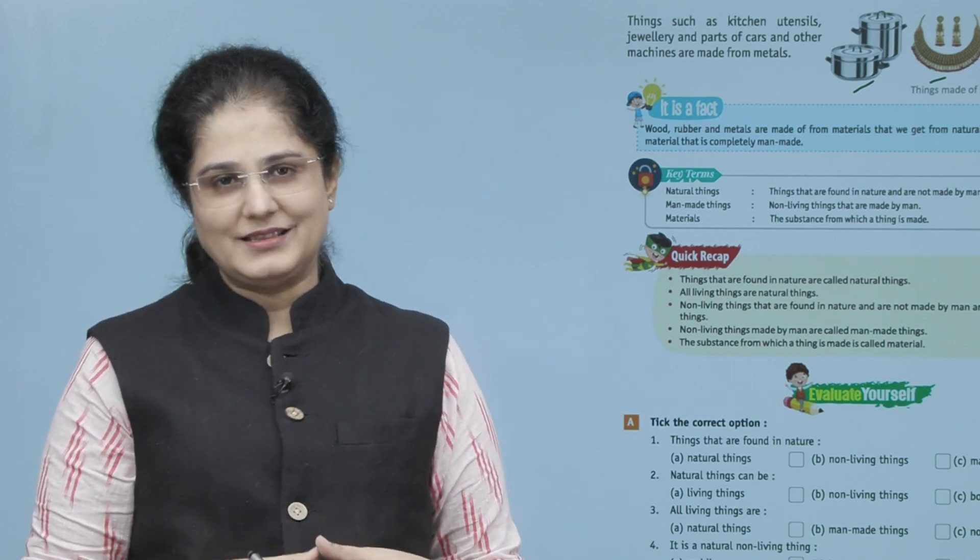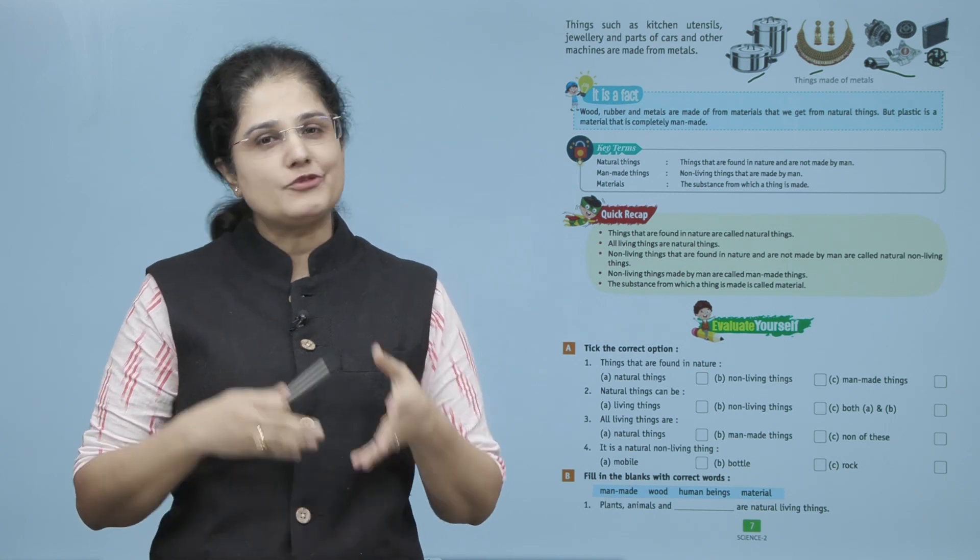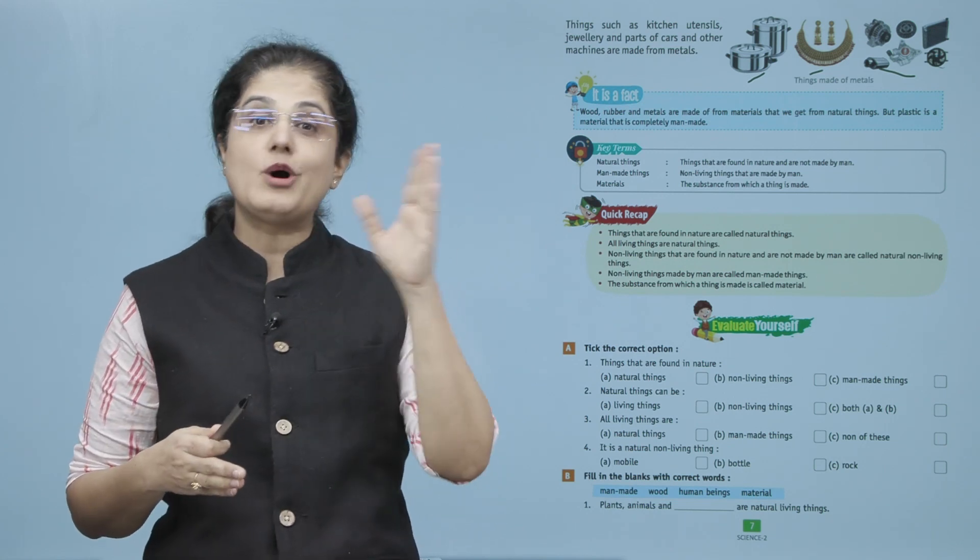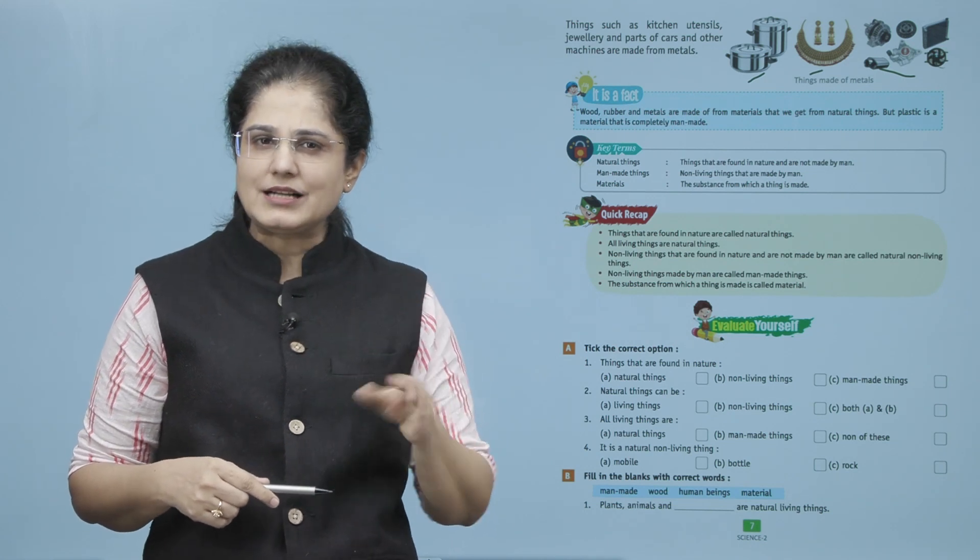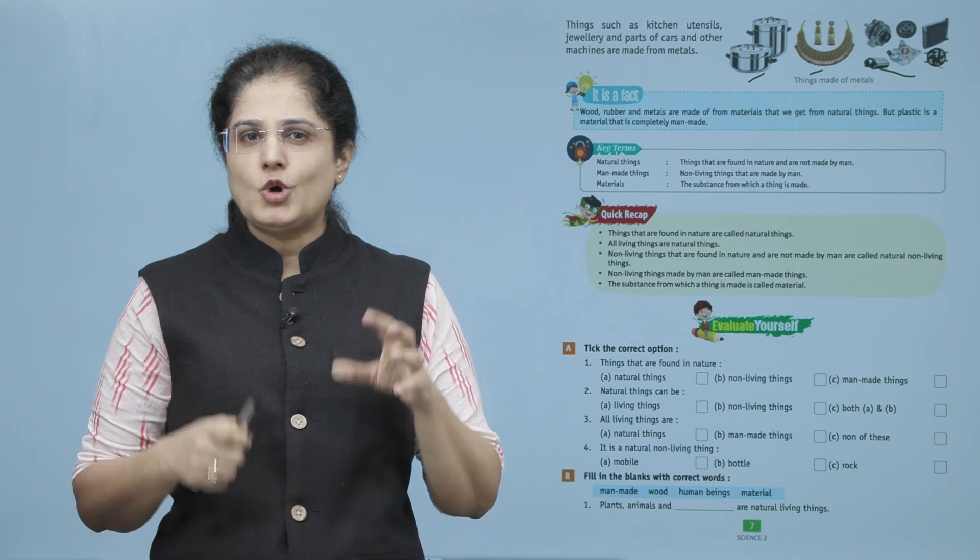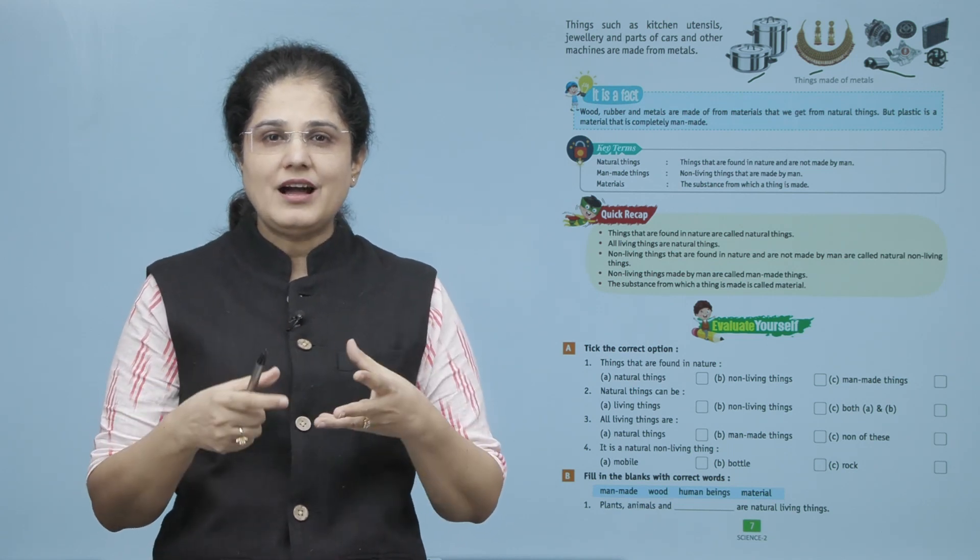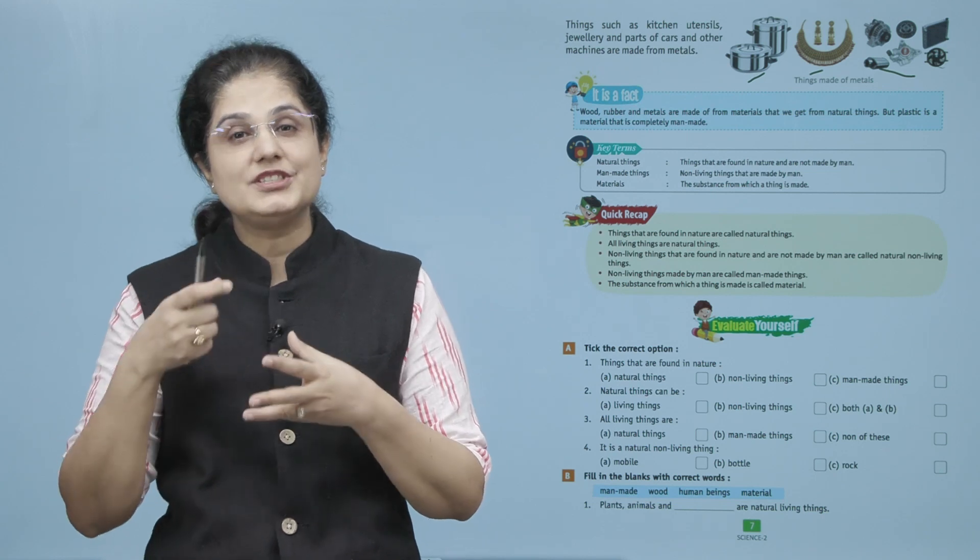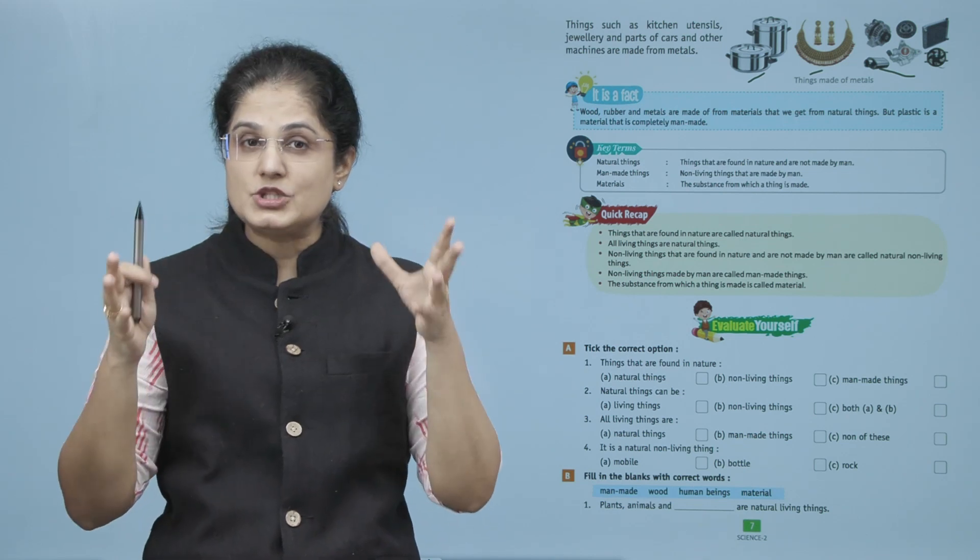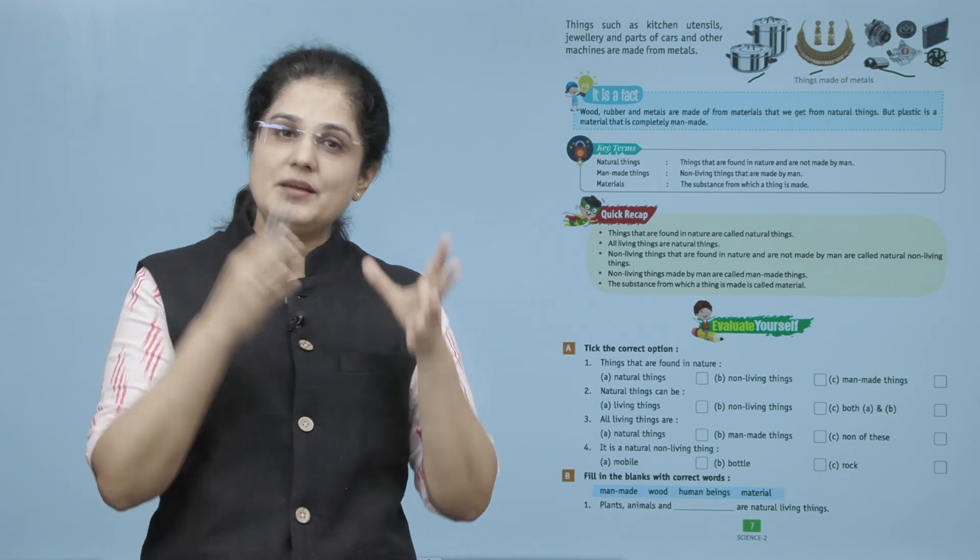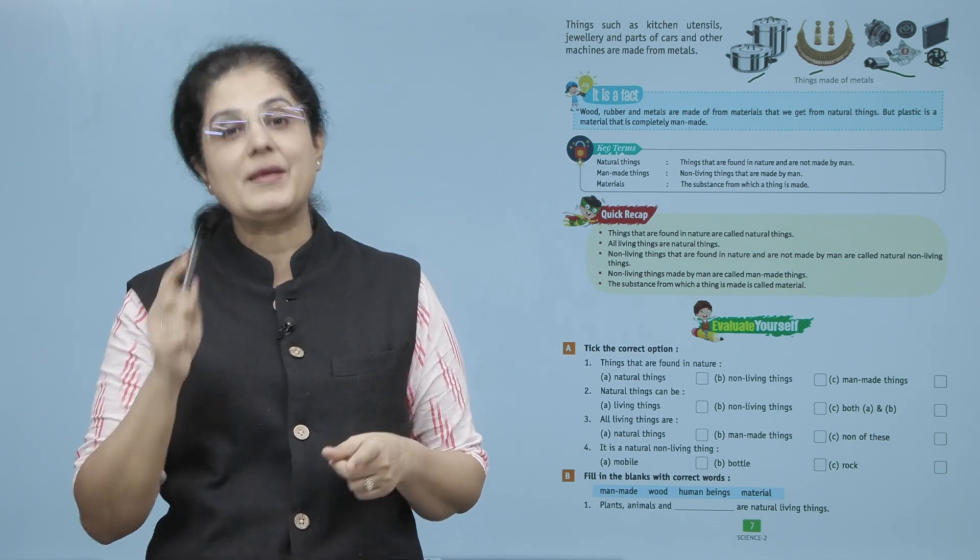It is a fact: wood, rubber, and metals are made from materials that we get from natural things, but plastic is a material that is completely man-made. To lakdi ho gai ya koi metal ya rubber ho gaya, yeh hume nature se natural cheezo se milta hai. Lekin jo plastic hum istamal karte hai alag-alag cheezo ko banane ke liye, yeh plastic jo hai yeh pura ka pura insaan dwara banaya gaya hai, man-made hai.